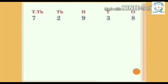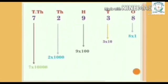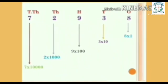Now you can see the value of each digit. To find the place value of each digit, multiply all the digits one by one by their respective place values: 8 into 1's, 3 into 10's, 9 into 100's, 2 into 1000's, 7 into 10,000's.